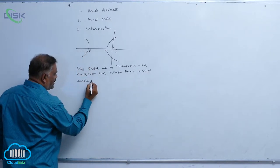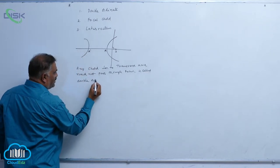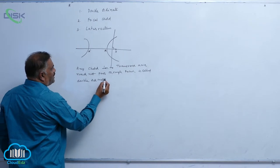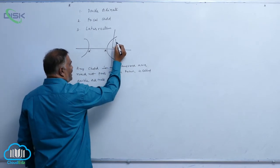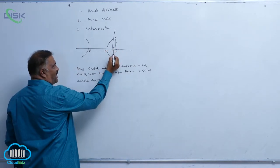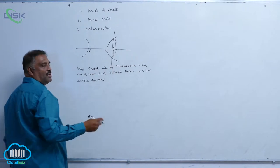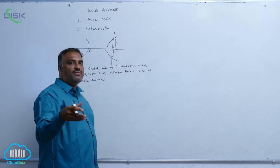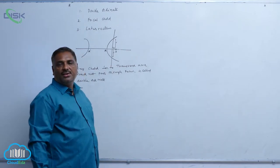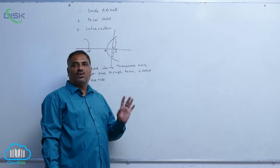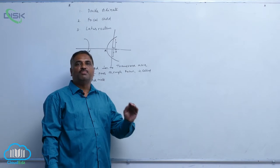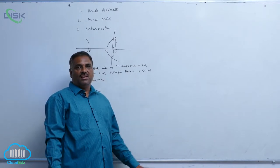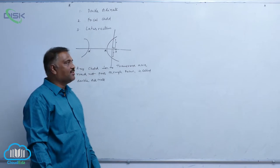You can see very clearly here: this particular part is the y-coordinate, and this is again the y-coordinate. Ordinate plus ordinate gives you double ordinate. So a double ordinate is a chord which is perpendicular to the transverse axis and need not pass through the focus.